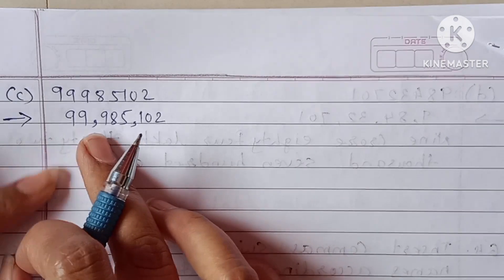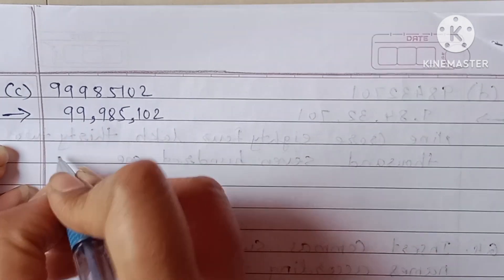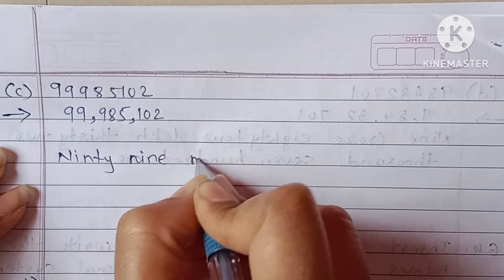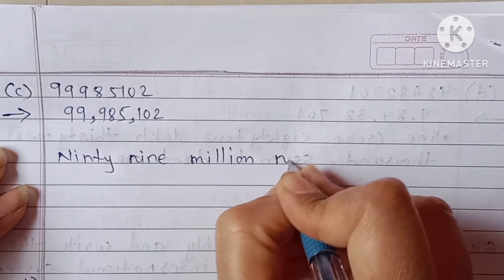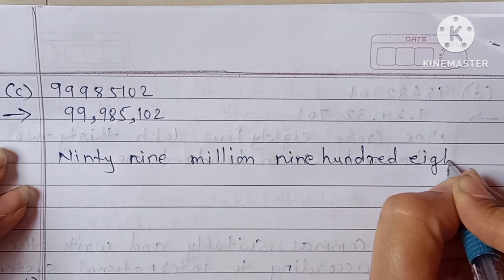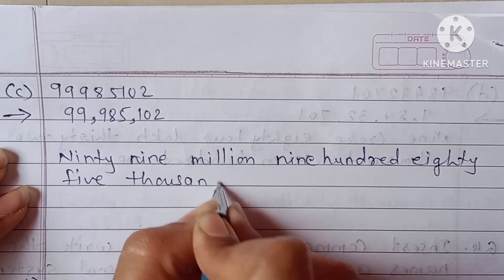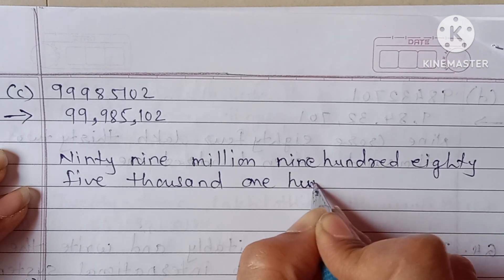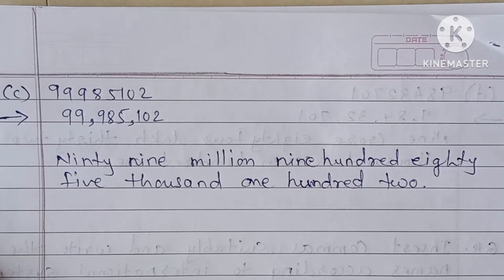Next: 99,985,102. That is ninety-nine comma nine hundred and eighty-five comma one hundred and two. So: ninety-nine million, nine hundred and eighty-five thousand, one hundred and two.